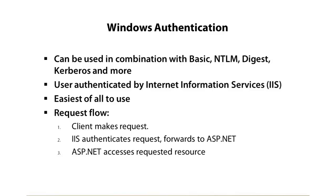If pass-through is not enabled, users are prompted with a dialog to enter a username and password, or possibly a domain username and password. IIS then authenticates against something like Active Directory or another LDAP Directory Services store. If valid, your code is invoked and you can access the username and the user's roles or groups. Windows Authentication is typically used for intranet scenarios because you don't really want to add external people to your Active Directory.